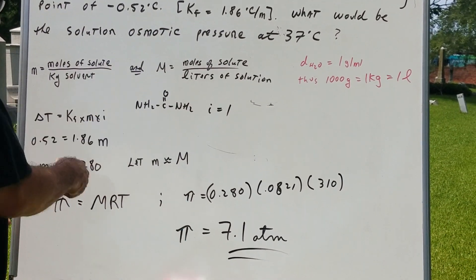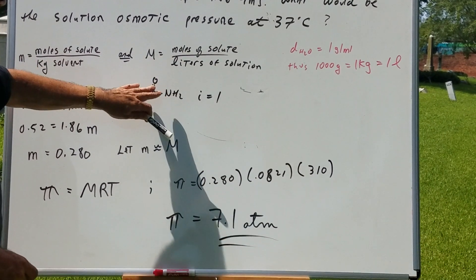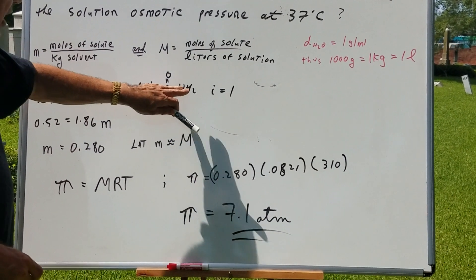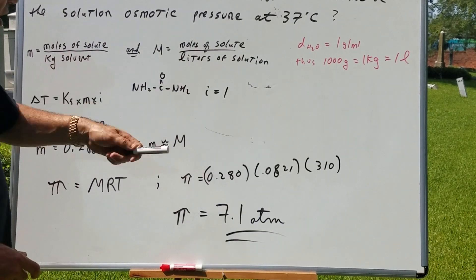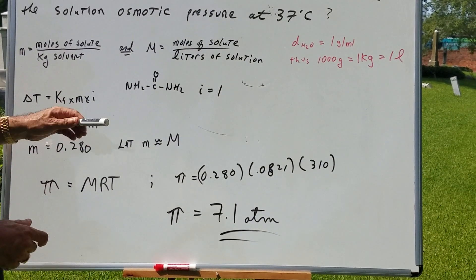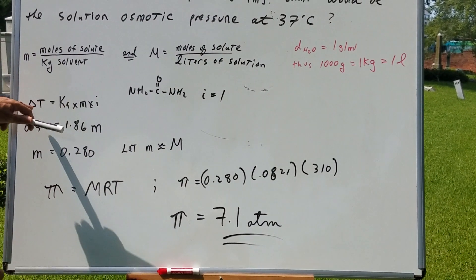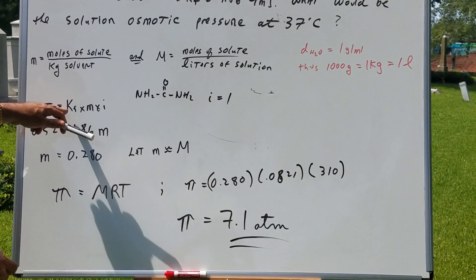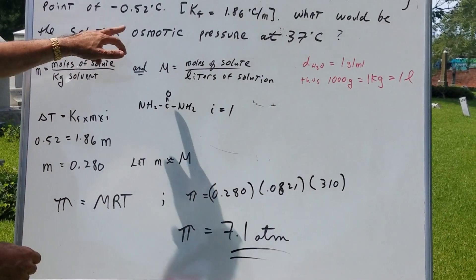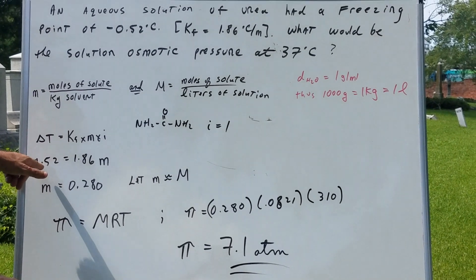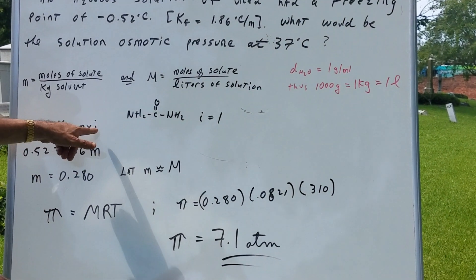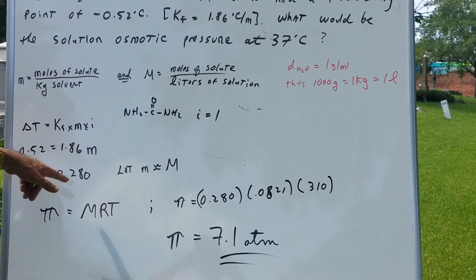First of all, this is the structure of urea. And therefore, this molecule is not going to break up. And therefore, the i is going to be equal to 1 because it's a non-electrolyte. You first write the formula delta T is Kf times m times i. We lower the freezing point by 0.52 degrees. We know the constant. i is 1. And we solve for little m.